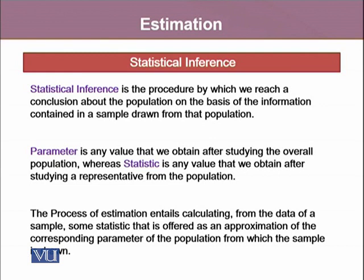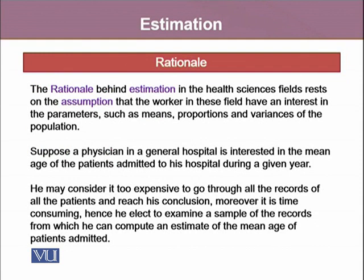The process of estimation entails calculating from the data of a sample some statistic that is offered as an approximation of the corresponding parameter of the population from which the sample is drawn. The rationale behind the procedure of estimation, in the health sciences field, rests on the assumption that workers in these fields have an interest in parameters such as means, proportions, and variances of the population. But one should understand that we cannot always study the population to observe the value of the parameter; therefore, we always have to rely on sample surveys.